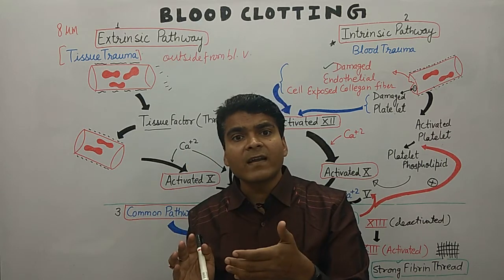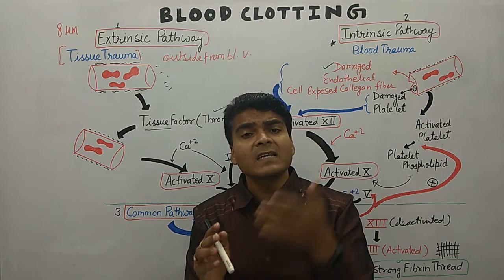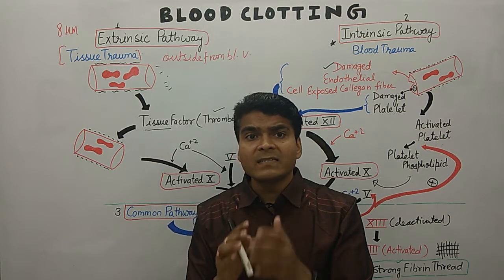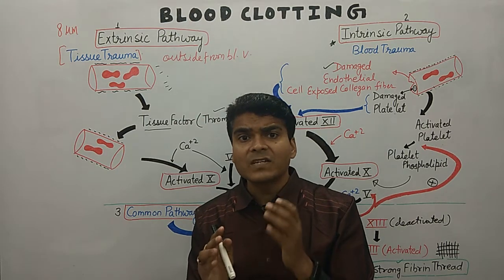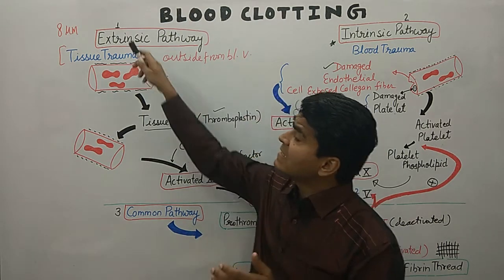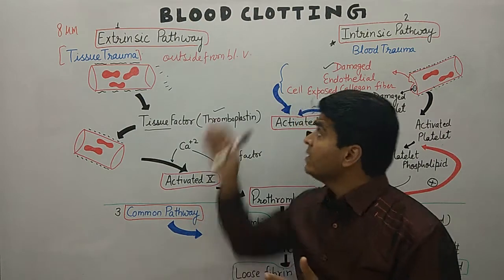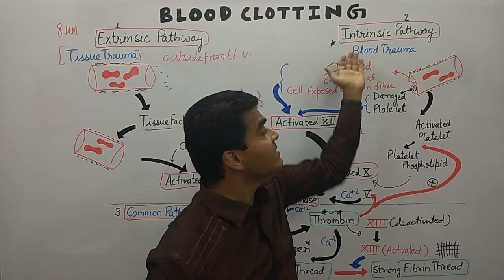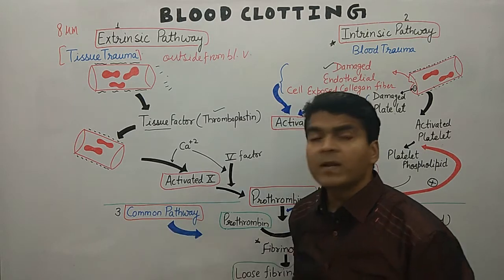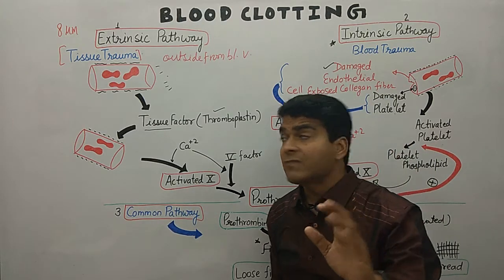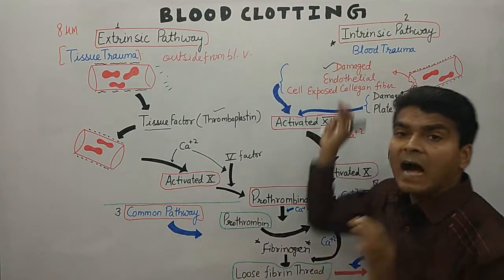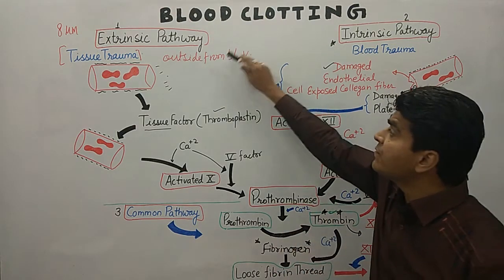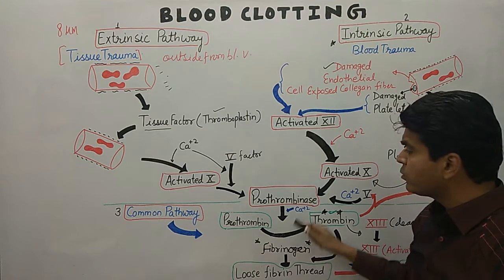There are 13 clotting factors — I've already discussed those with you, and the trick to remember all 13 factors is discussed in another lecture. Now, the three pathways of blood clotting: the first is extrinsic, the second is intrinsic, and the third is common. The first two pathways are involved in the formation of prothrombinase.